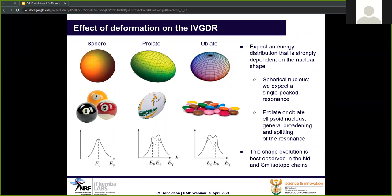In the rugby ball, you have a vibration along a longer axis as well as vibrations along the two shorter axes, meaning the energies are now different and lead to different k-components. For the prolate case, you have a k equals 0 component on the lower energy side and a k equals 1 component on the upper side. Two good examples of this evolution of the shape of the isovector giant dipole resonance with deformation are the neodymium and samarium isotope chains.